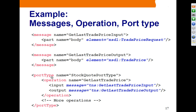Port type is the third element, named stock quote port type here. Port type, as mentioned, is a collection of operations. In our example, there is a single operation called get last trade price. An operation is made of an input message and an output message. Now machines know which message is used for the request and which for the response. There could be multiple operations, but here we have just one.